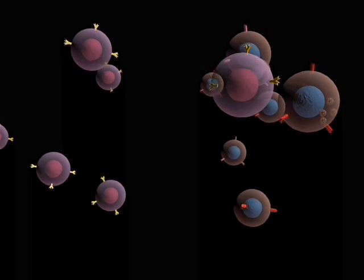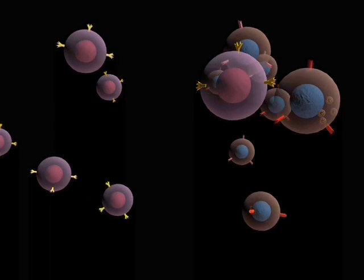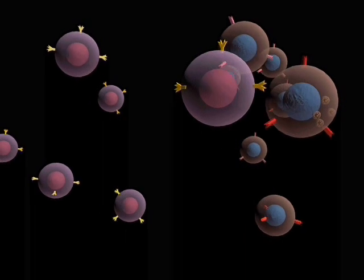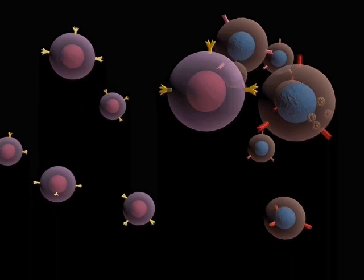This is one of the reasons why lymphocytes circulate around the body to ensure the small number of cells which are able to recognize a specific antigen will actually come into contact with it.